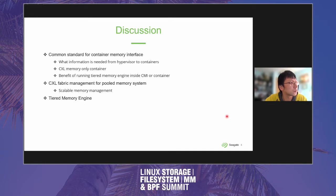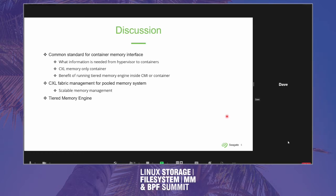Someone from the audience confirms people do want this capability. In systems where persistent memory is used in a volatile mode — which we can do in mainline today — they want to say 'this container paid the cheap price so we give them a lot of slower tier memory, and another paid top dollar so they get lots of regular RAM.' This is wanted even before CXL, for instance with Intel Optane today.